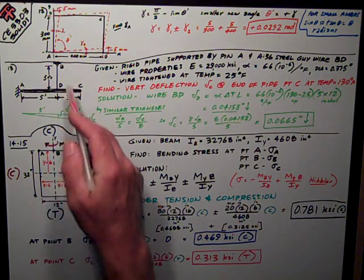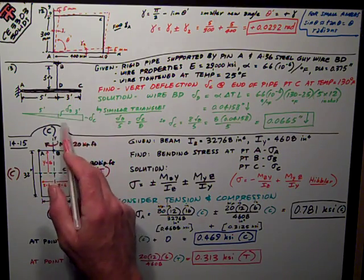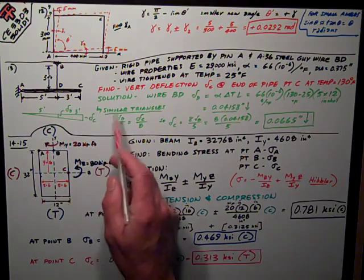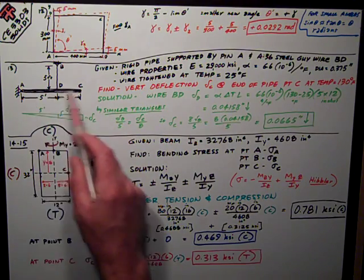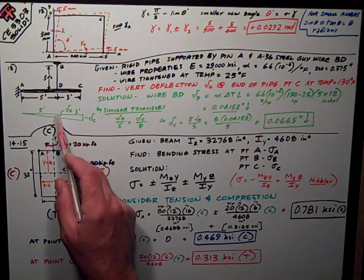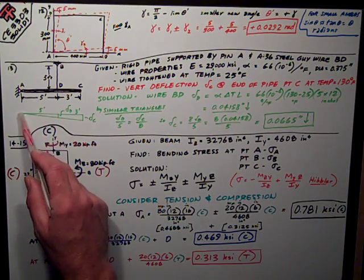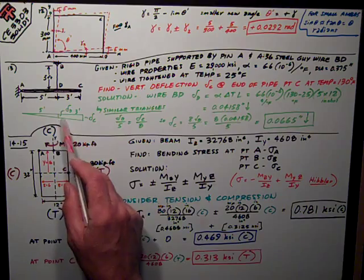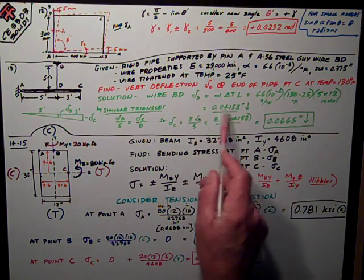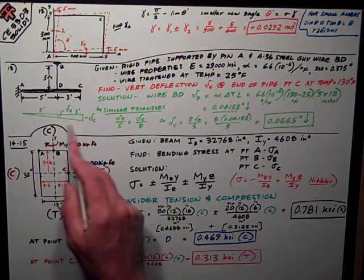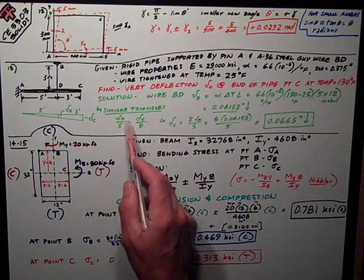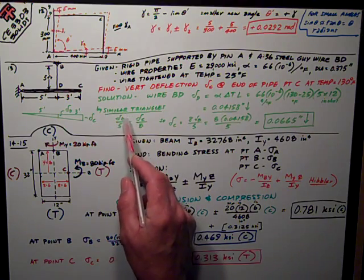Then by similar triangles, I've got an 8-foot-long pipe. At the 5-foot point, it's hinged here, and it deflects that distance that I just calculated. So at the end, 8 feet from the pin, it deflects a similar amount by similar triangles.